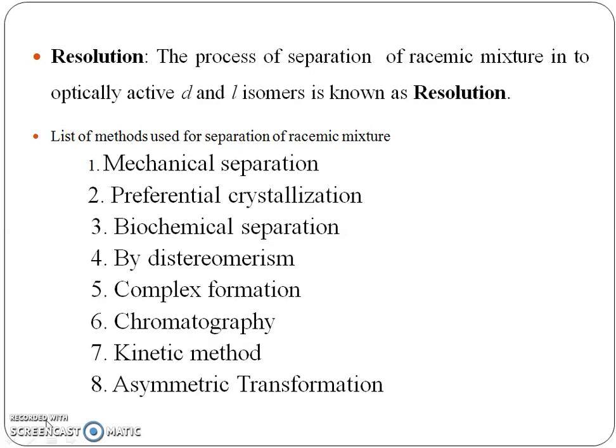There are various methods used for the separation of racemic mixtures. These include: mechanical separation, preferential crystallization, biochemical separation, diastereomerism, complex formation, chromatography, kinetic method, and asymmetric transformation. These are the seven to eight methods used for resolution of a racemic mixture.